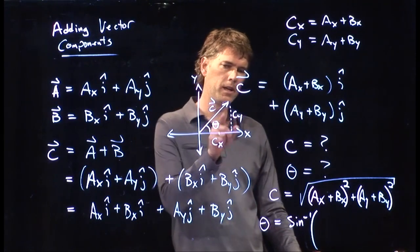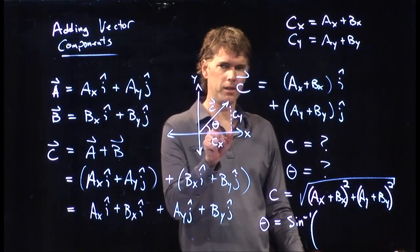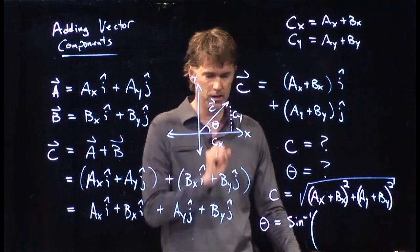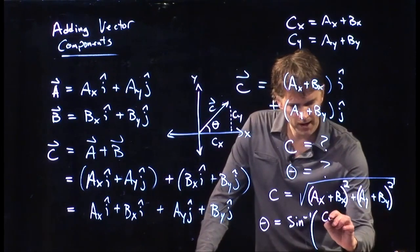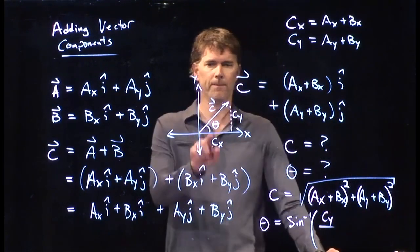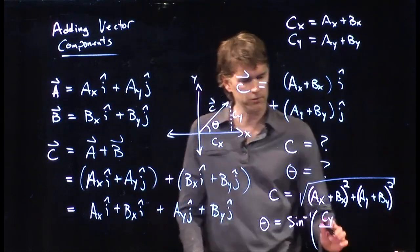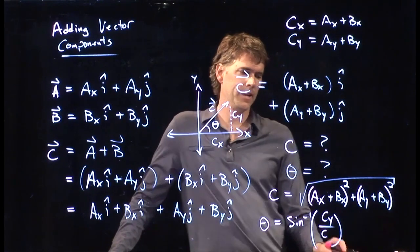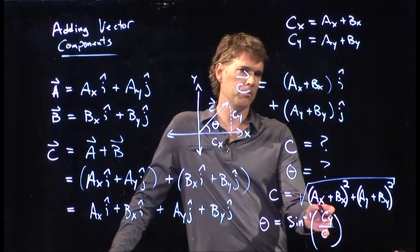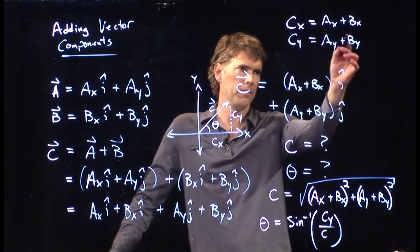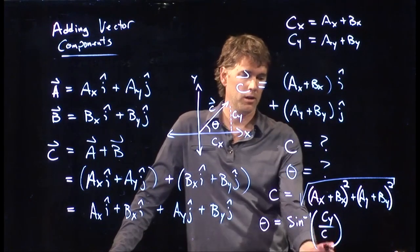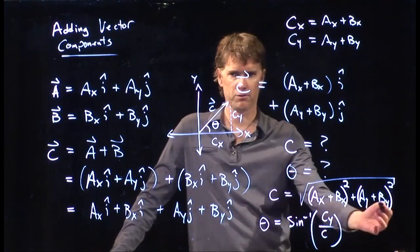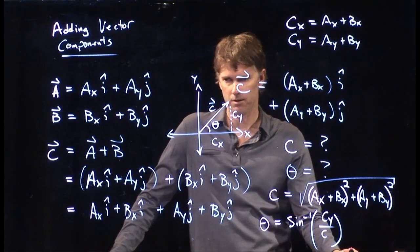So, what is the sine of theta? You said sine of theta is opposite, which would be this, right? C sub y over hypotenuse, which is regular old C. And now you know what that stuff is. So, you can plug it in. Cy is this stuff right here, Ay plus By. C is this big long thing right here. The square root of all this stuff.